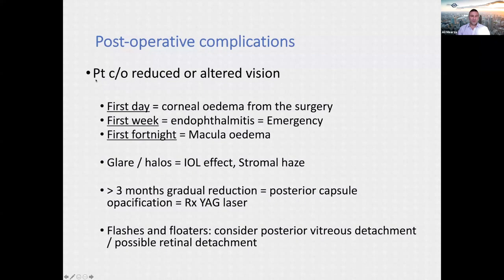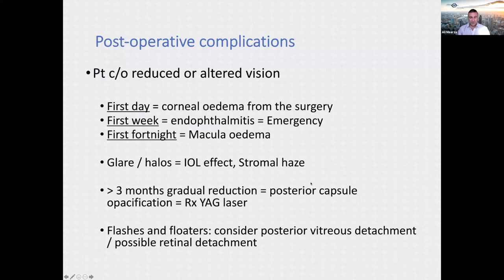For reduced or altered vision: on day one, think corneal oedema; in the first week, think endophthalmitis — an emergency; in the first fortnight, macular oedema, which can come on for six to eight weeks. Glare and halo are typically due to the intraocular lens, especially multifocals. After about three months, gradual reduction of vision is typically posterior capsule opacification, treatable with YAG laser. Floaters and flashes need a dilated retinal examination to rule out retinal tear and detachment.